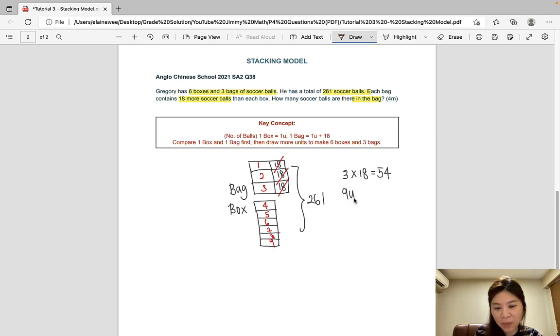Therefore, we know that 9 equal units is 261 minus 54. And that would give us 207. And of course, we'll go ahead and solve one unit. So 207 divided by 9, that gives us 23.